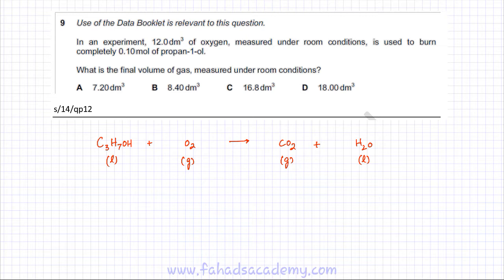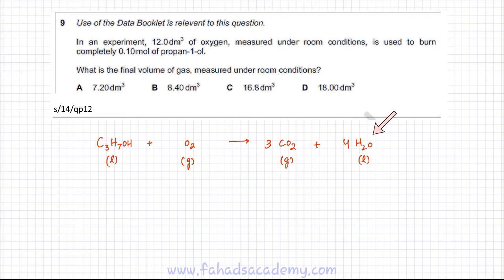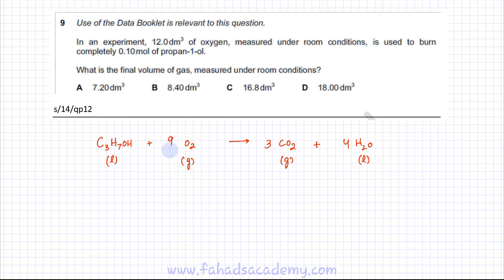We need to balance this equation. There would be three CO2 molecules and four H2O molecules. To balance oxygen: there are six oxygen in three CO2's and four oxygen in four H2O's, giving a total of ten oxygen in the products. There's one already in propanol, so we need nine oxygen from O2, which means 4.5 oxygen molecules.